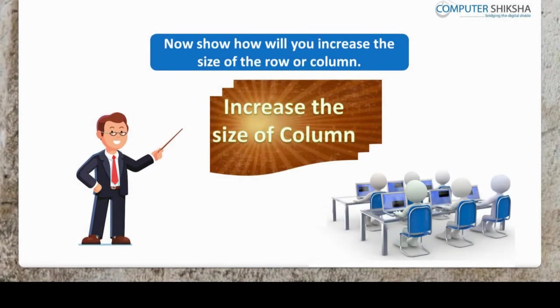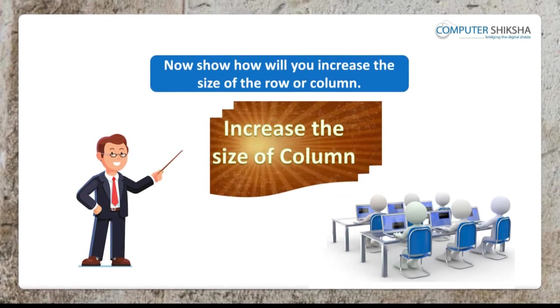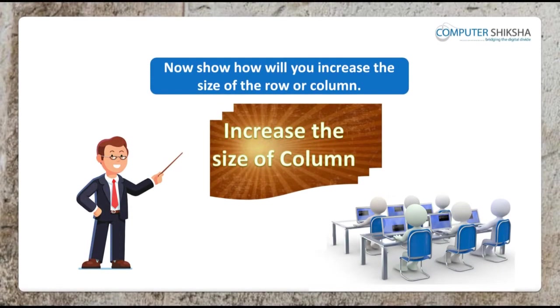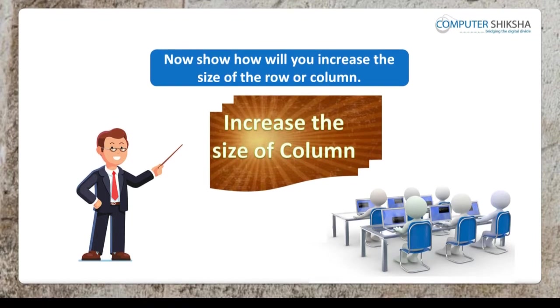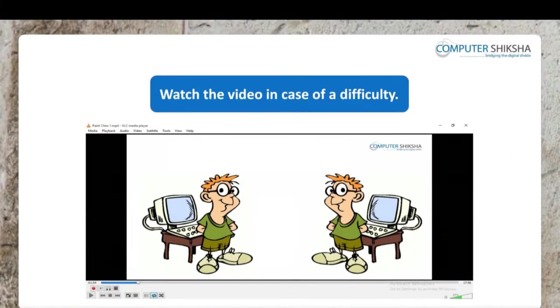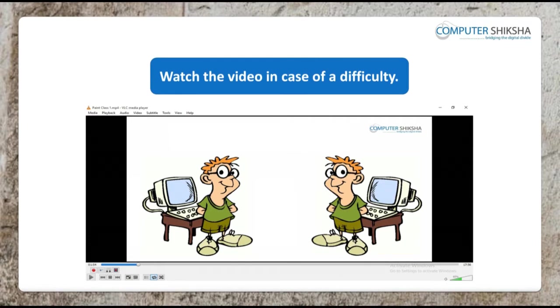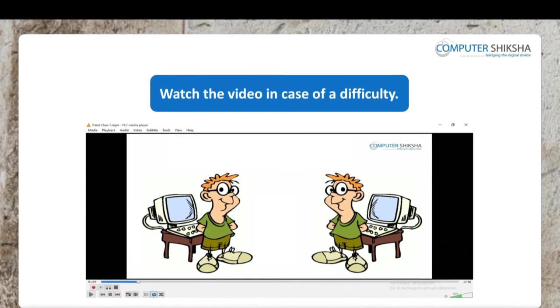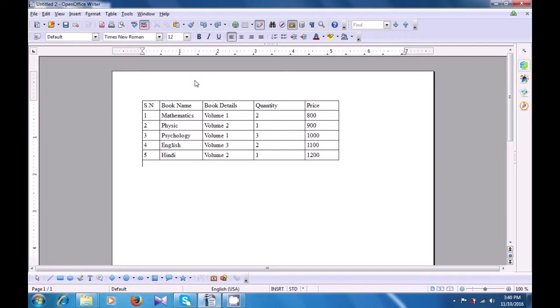Now, how will you increase the size of the row or column? Watch the video in case of difficulty. Let us now see how we can increase or decrease the column width on our table. First select the column, keep the cursor where you want to increase or decrease the column width. Go to the table menu, click on that, and look for the auto fit option.